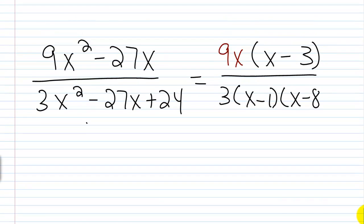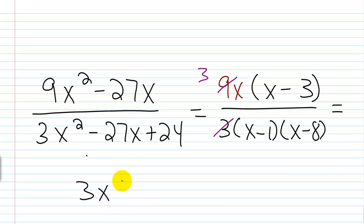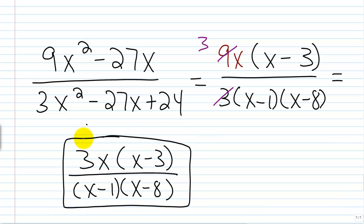We don't have common binomial factors, but we can cancel the 9 with the 3, leaving a 3. The final answer is 3x times (x minus 3) over (x minus 1)(x minus 8). This is perfectly acceptable as a final answer for a test.